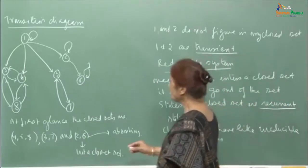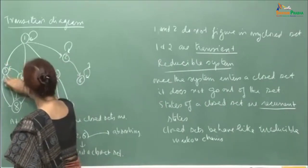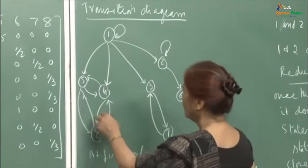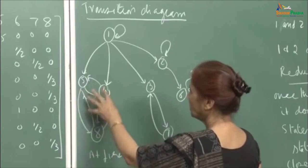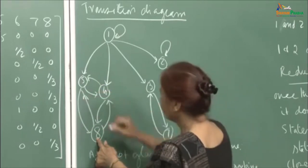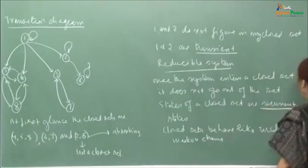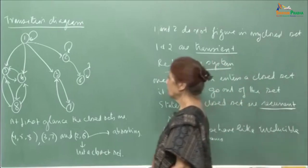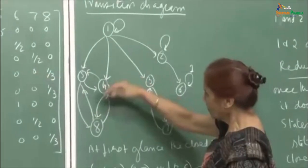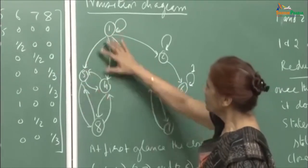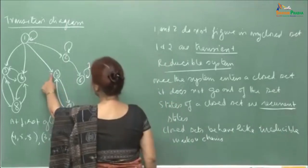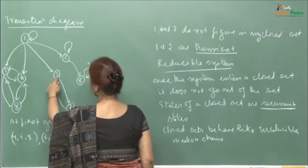Once the system enters a closed set — say state 4 or 5 — it will keep hopping among those states only, with no arc going out of {4, 5, 8}. Such states are called recurrent, because they keep occurring again and again. The moment a system enters a closed set there is no way of going out. Similarly, once in state 3 you go on going from 3 to 7 or 7 to 3. If you come to state 2 and then go to 6, you just stay in state 6 — you do not get out of it.